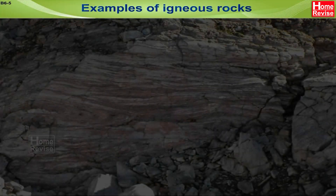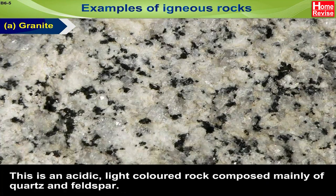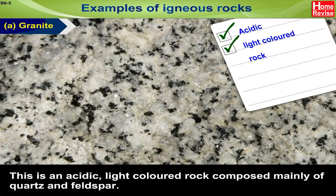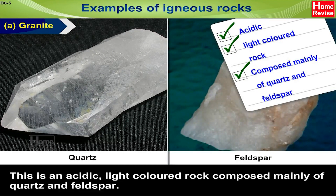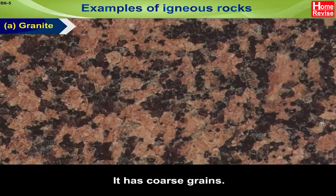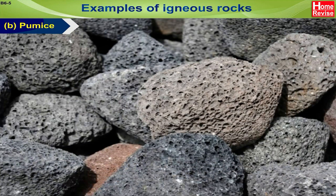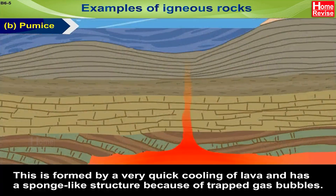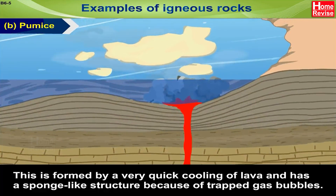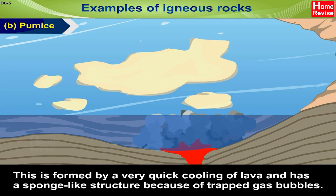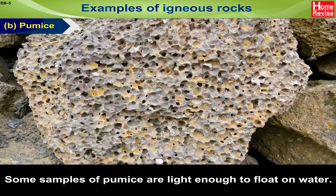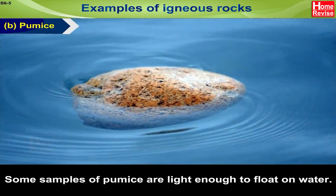Examples of igneous rocks. A. Granite. This is an acidic, light-coloured rock composed mainly of quartz and feldspar. It has coarse grains. B. Pumice. This is formed by a very quick cooling of lava and has a sponge-like structure because of trapped gas bubbles. Some samples of pumice are light enough to float on water.